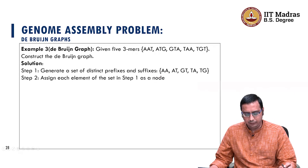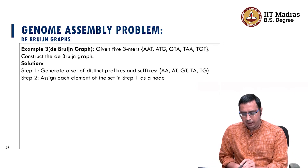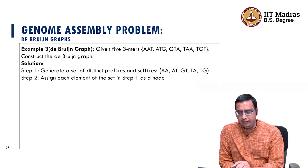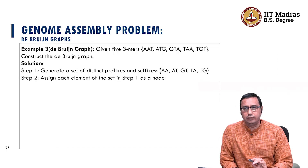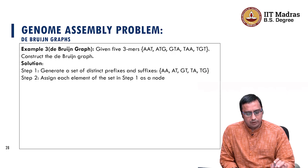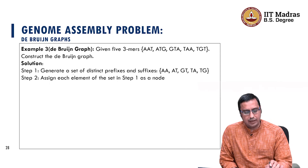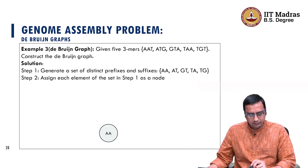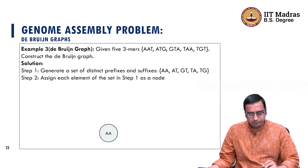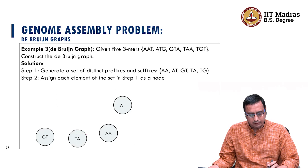Hence, my node set has five elements: AA, AT, GT, TA, and TG — five nodes. We assign each element of this set as a node, constructing node AA, node AT, node GT, node TA, and node TG.